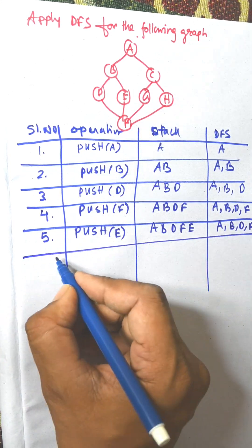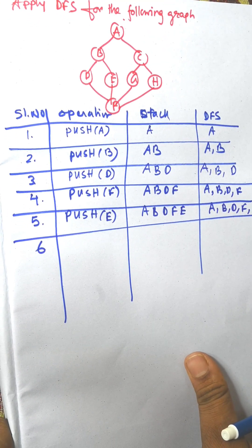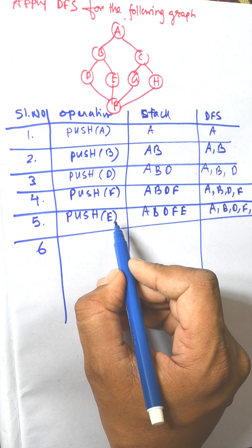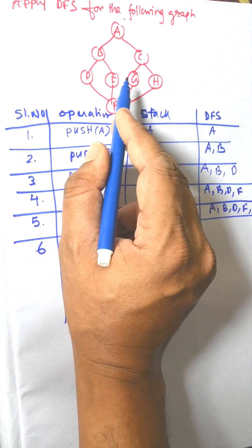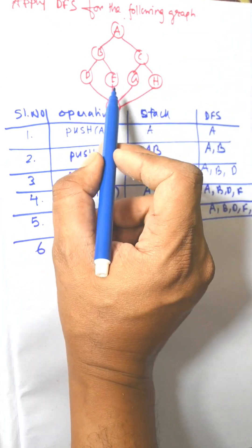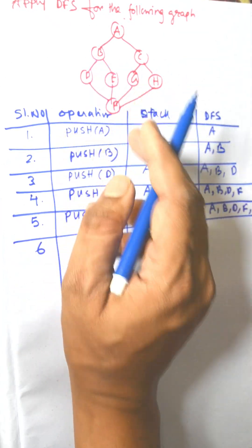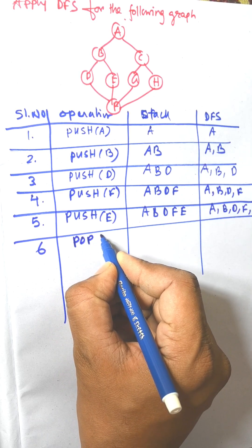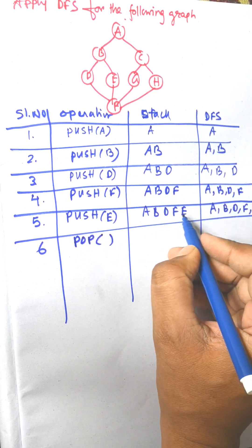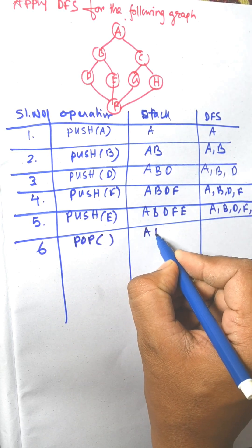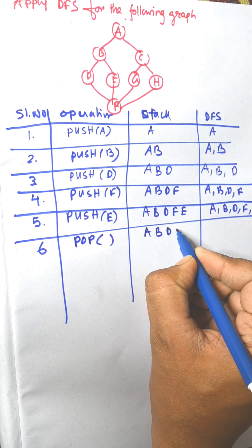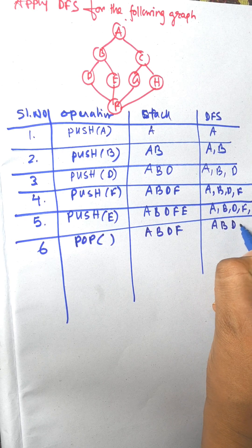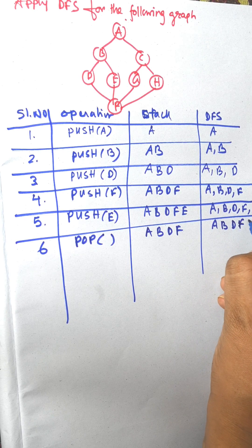Now serial number 6. From E, there is no unvisited node — B is already visited — so we need to pop. Pop means the last element will be deleted. The stack becomes A, B, D, F and the visited list remains A, B, D, F, E.